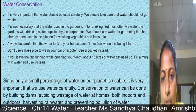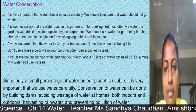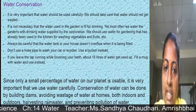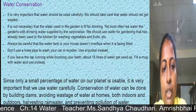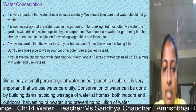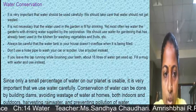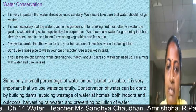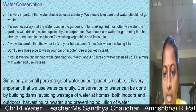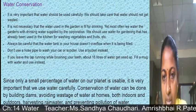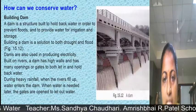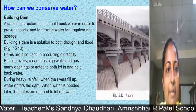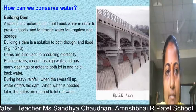Only a very small percentage of water on our planet is usable, so it is very important to use it carefully. Conservation can be done by building dams, avoiding wastage of water at home both indoors and outdoors, doing rainwater harvesting, and preventing pollution of water. Building a dam is a solution for both drought as well as flood.